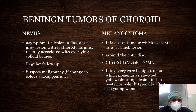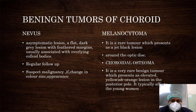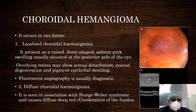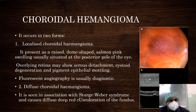The benign tumors of the choroid include nevus — asymptomatic, flat, gray lesions with feathered margins requiring regular follow-up. Melanocytoma is a rare tumor presenting as a jet-black lesion surrounding the optic disc. Choroidal osteoma is a very rare benign tumor presenting as an elevated yellowish-orange mass, typically in the posterior pole, affecting young women. Choroidal hemangioma occurs in two forms: localized choroidal hemangioma presents as a raised dome-shaped salmon-pink swelling in the posterior pole, where the overlying retina may show serous detachment. Diffuse choroidal hemangioma is seen in association with Sturge-Weber syndrome, causing a diffuse deep-red appearance of the fundus. Fluorescein angiography is usually diagnostic.